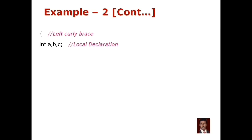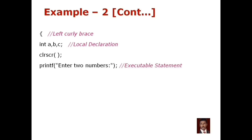We have variables a and b, and a result variable. For the result we declare an additional variable, separating with a comma and a semicolon. We declare the local declaration section, and we use a clear screen function to clear the previous program output. Then we enter the two numbers using printf to display a prompt — this is an executable statement.